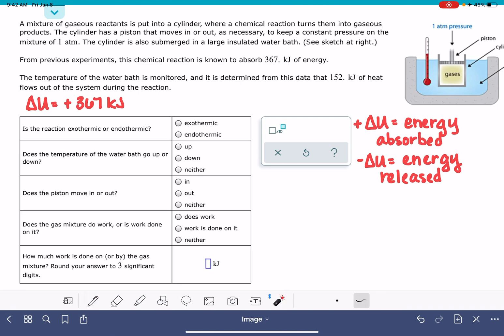Also, it tells us the temperature of the water bath is monitored, and it's determined that 157 kilojoules of heat flow out of the system. So the heat is our Q, and we need to know, again, is it a positive or a negative 157.